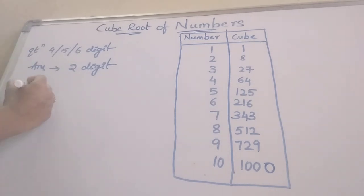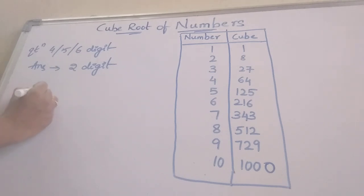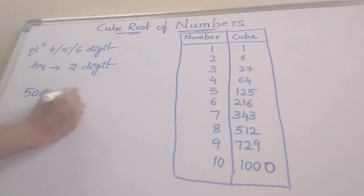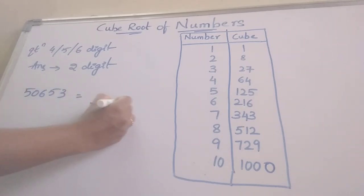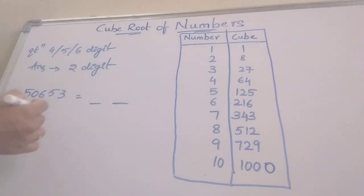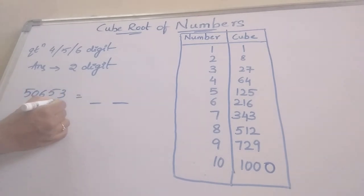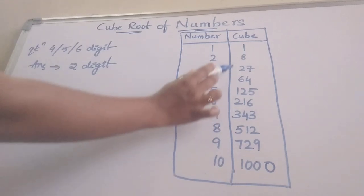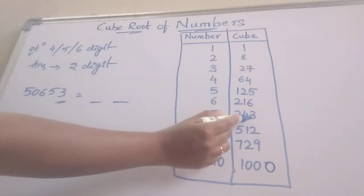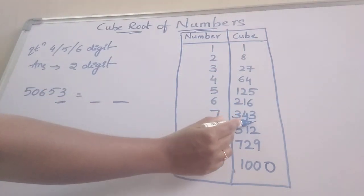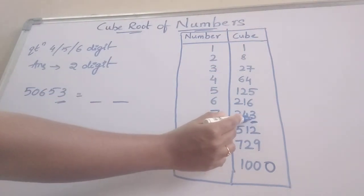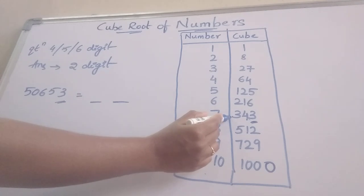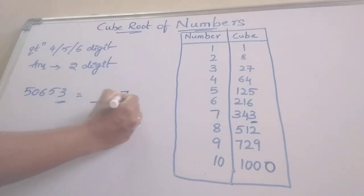First we can take one example: finding the cube root of 50653. For this we observe the last digit, which is 3. Where is 3 in our table? That is 343, which ends with 3. So we can directly write 7 here.